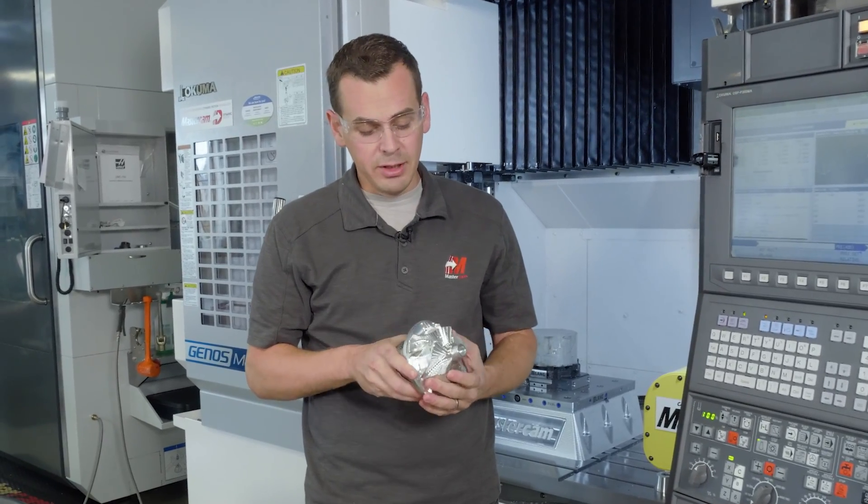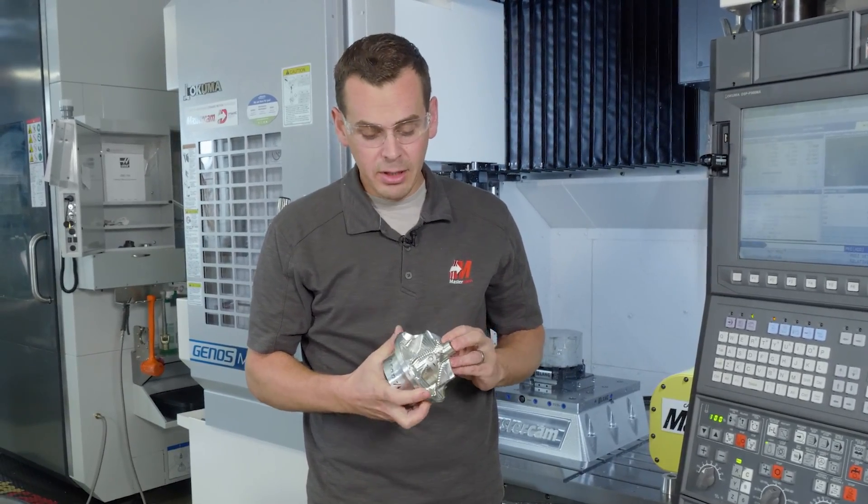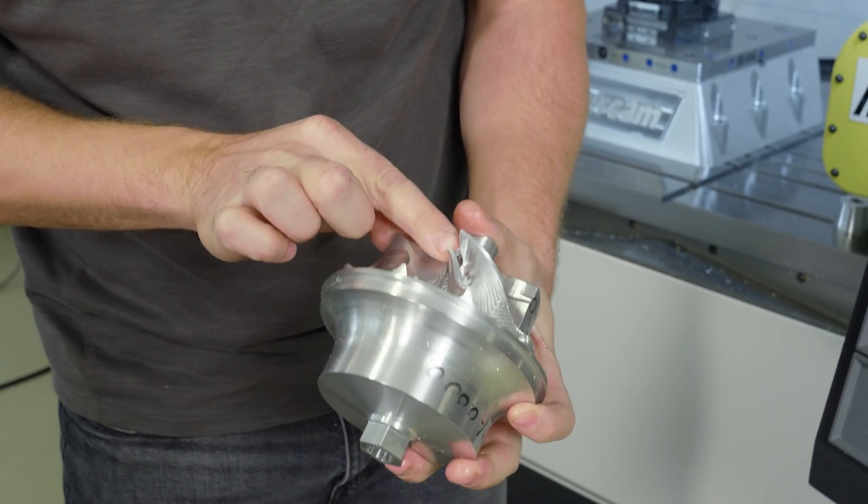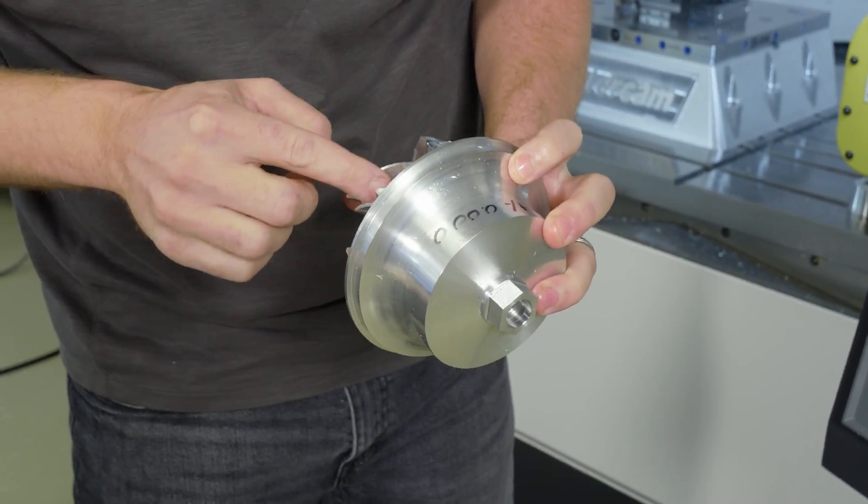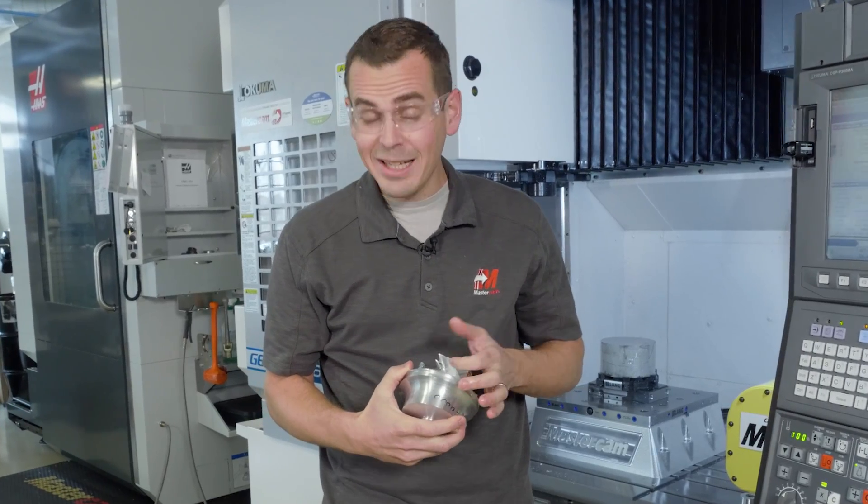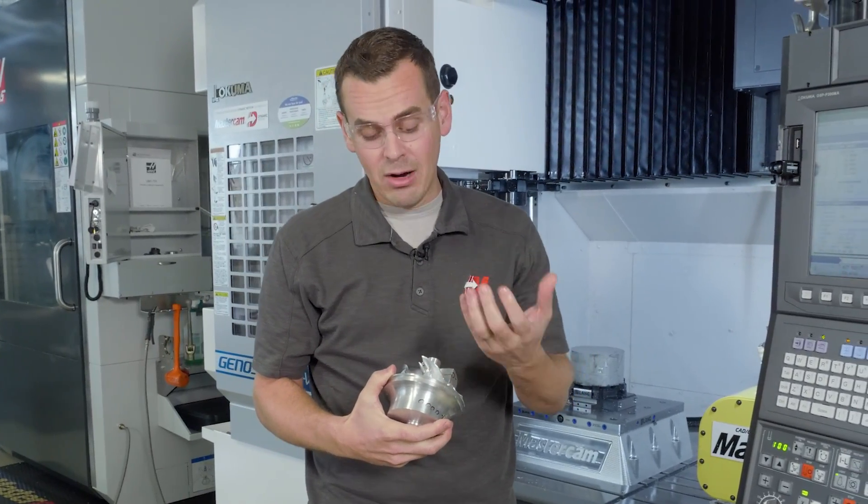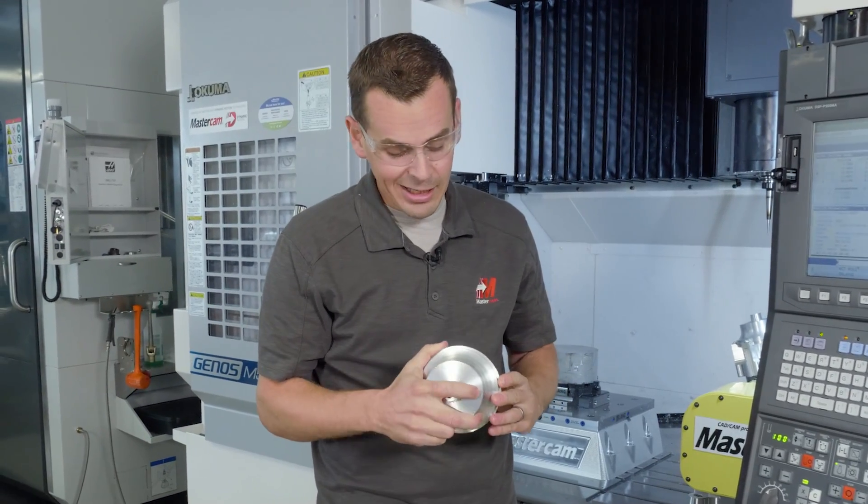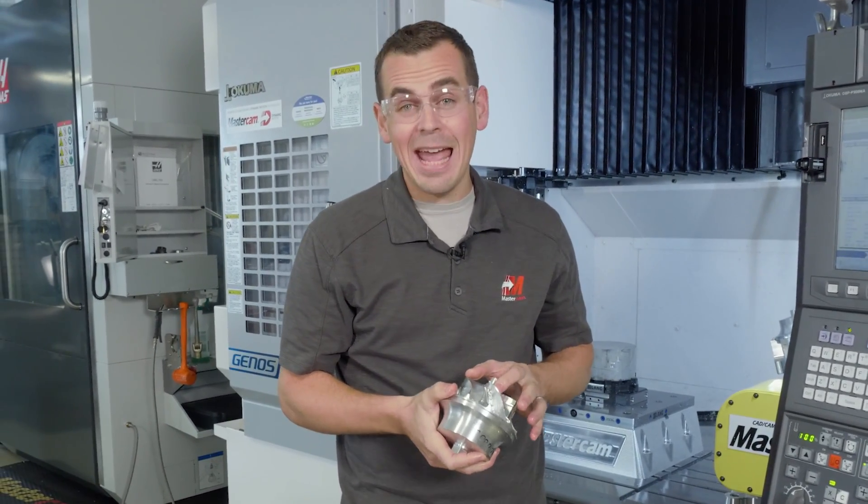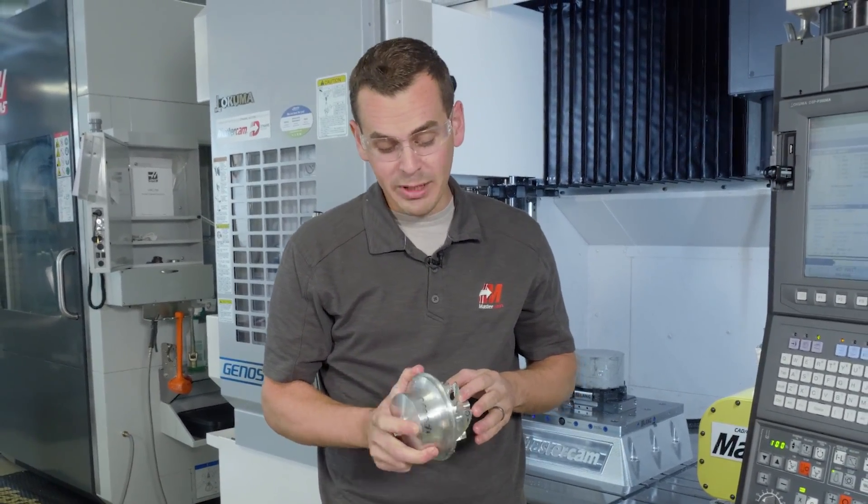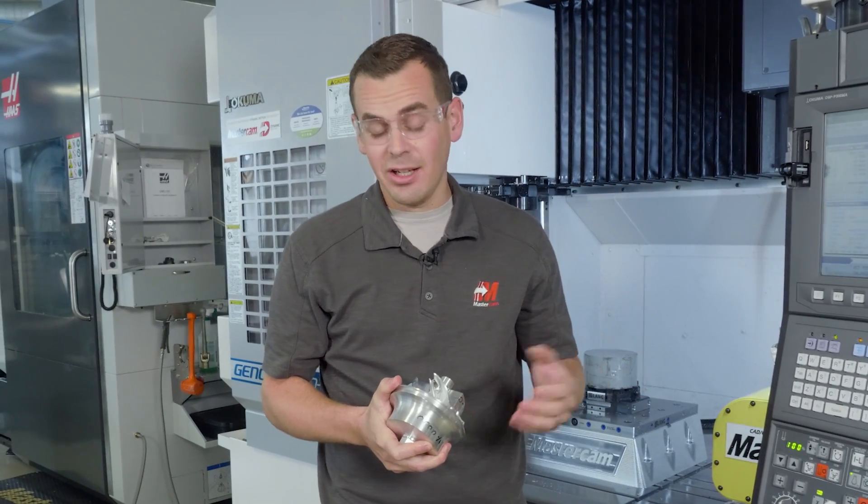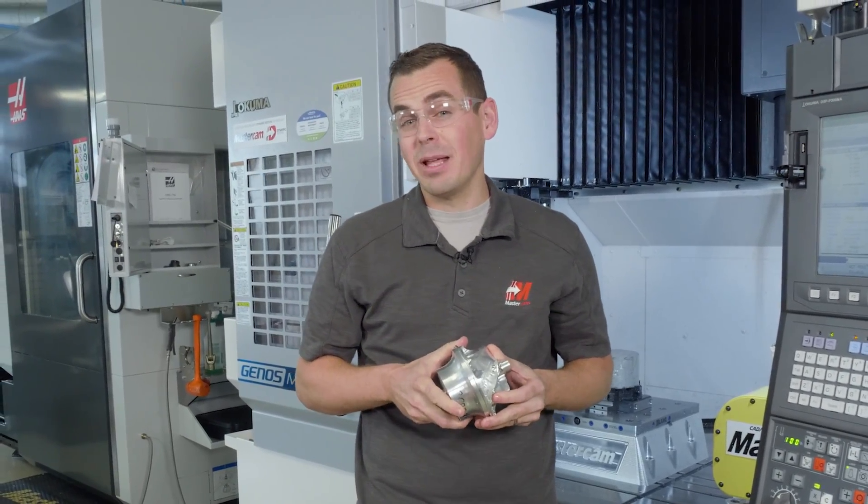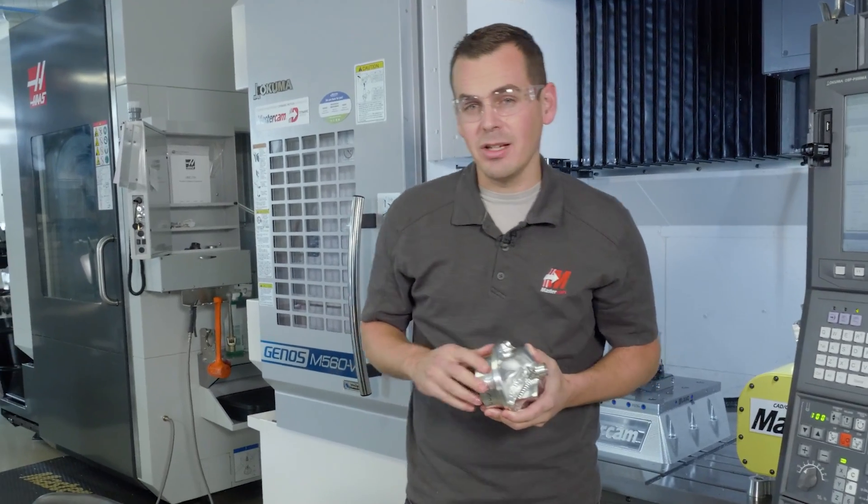So here we have the part that we roughed in 3 plus 2 using OptiRough. Now the thing I want to show here is that there's still quite a bit of material left in here. Despite this taking a while on the machine, you really can't get in there and get the good access without doing a bunch of planes and coming from a bunch of different indexes. And to be honest, we'd probably have to add another index over what we did before, even increasing the cycle time more. So instead, let's look at programming in BladeXpert and see what's involved in Mastercam.